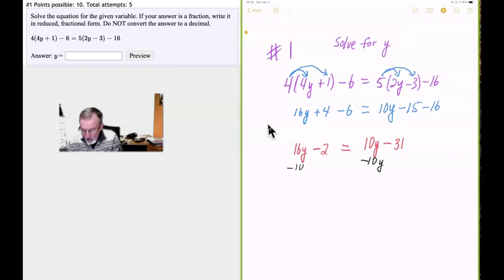And that's going to give us 16y minus 10y is 6y minus 2. And that's equal to negative 31 because these two cancel out.